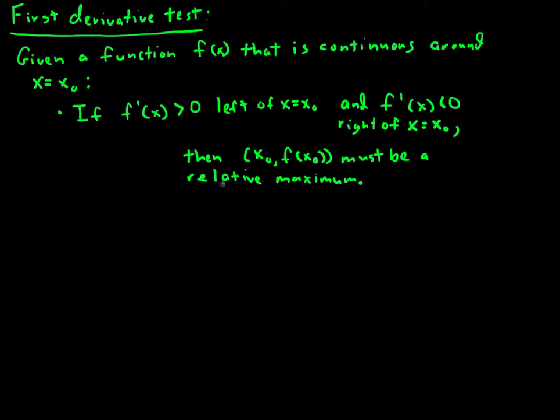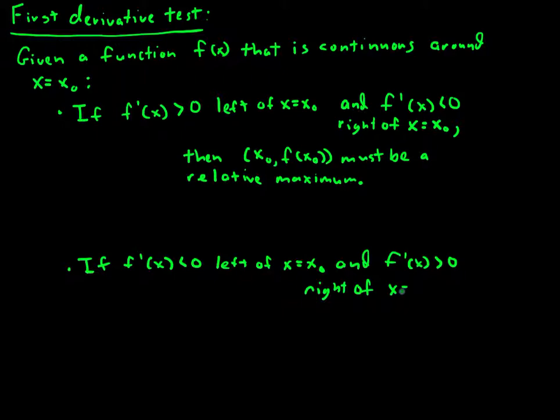I'll come back and explain that after I show the other possibility. The other one is this. If f prime of x is less than zero left of x equals x-naught, and f prime of x is greater than zero right of x equals x-naught, then x-naught, f of x-naught must be a relative minimum.